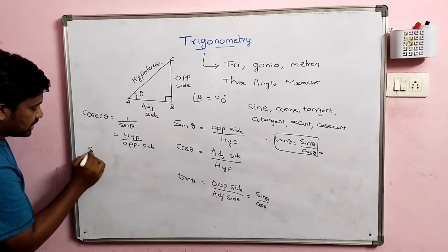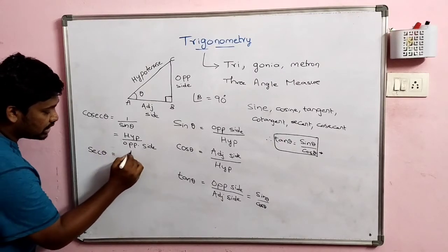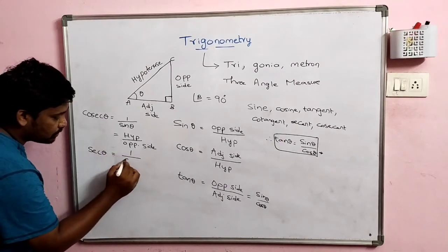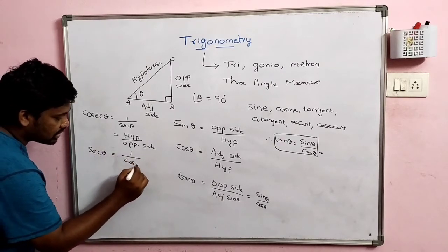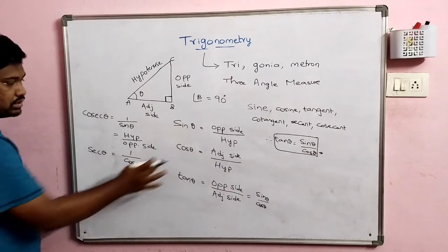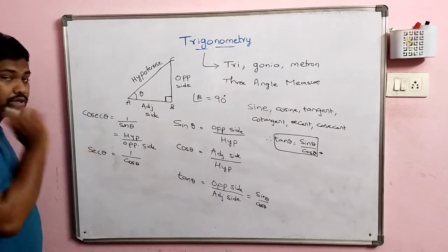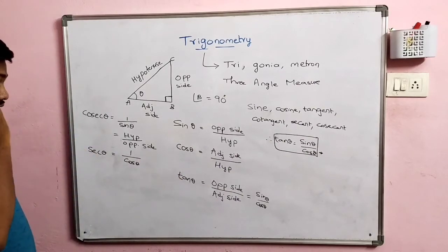Secant theta is the inverse of cosine. Secant theta is equal to 1 divided by cos theta. So, sec θ = 1 / cos θ, which equals hypotenuse divided by adjacent side.